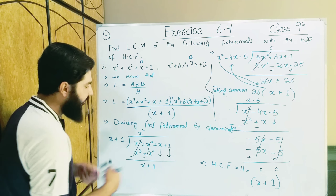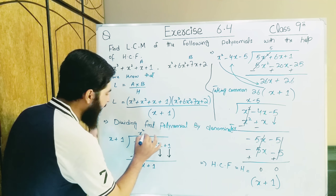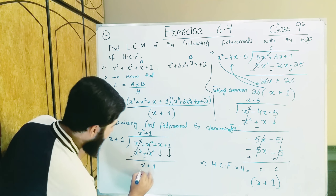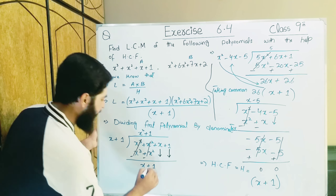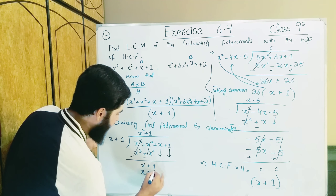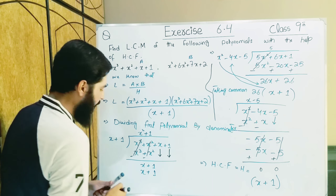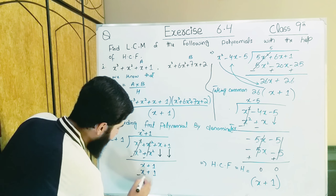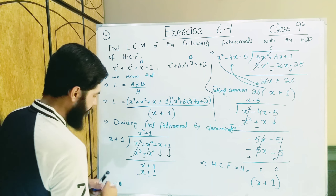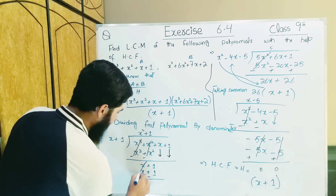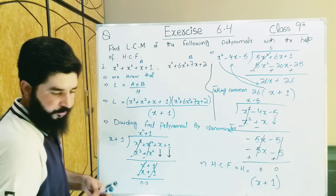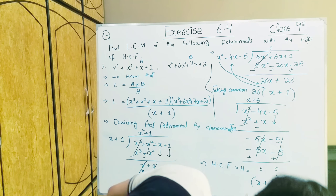x + 1 is already there, so we write 1. x × 1 = x, plus 1 × 1 = 1. Signs change: positive becomes negative, positive becomes negative. These cancel; these cancel — what remains is 0 and 0.